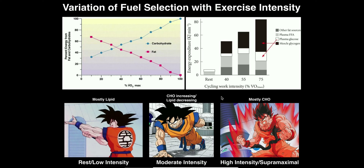So in other words, as we change the intensity of the exercise that we're performing, how does that change where the skeletal muscle is going to get its fuel source? Is it going to be mostly carbohydrate? Is it going to be mostly fat? And actually as you change the exercise intensity, we're going to see a shift in the percent contribution of the fuel source.